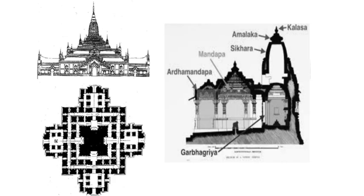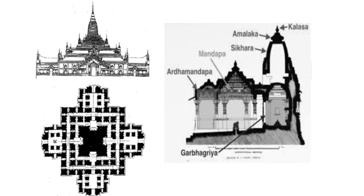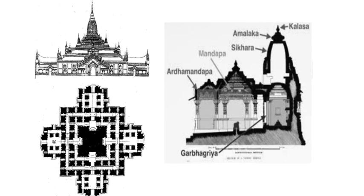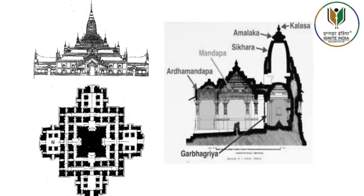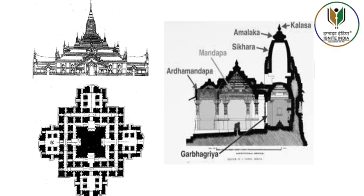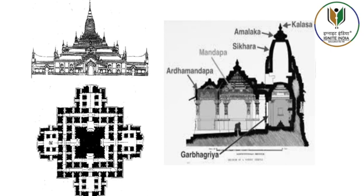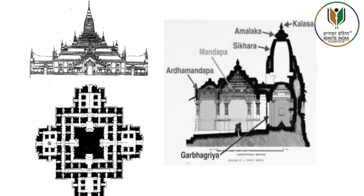The entrance to the temple may be a portico or colonnaded hall that incorporates space for a large number of worshippers, known as a mandapa. Freestanding temples tend to have a mountain-like spire, which can take the shape of a curving shikara in north India and a pyramidal tower called a Vimana in South India.